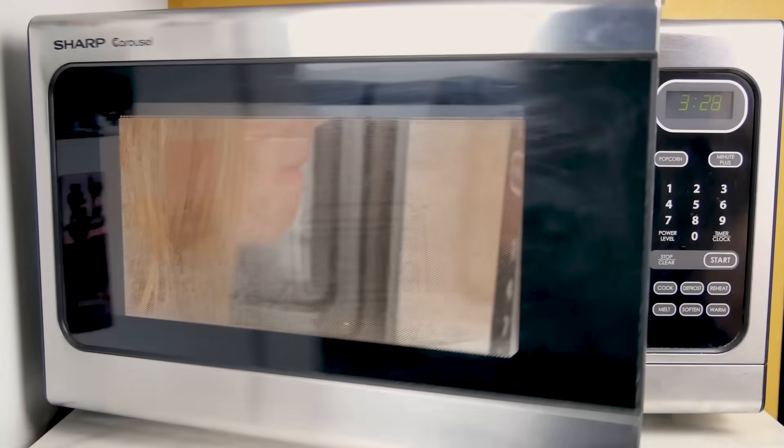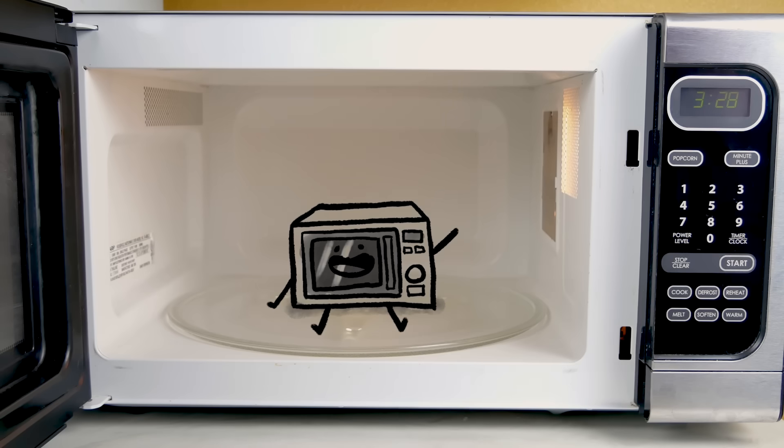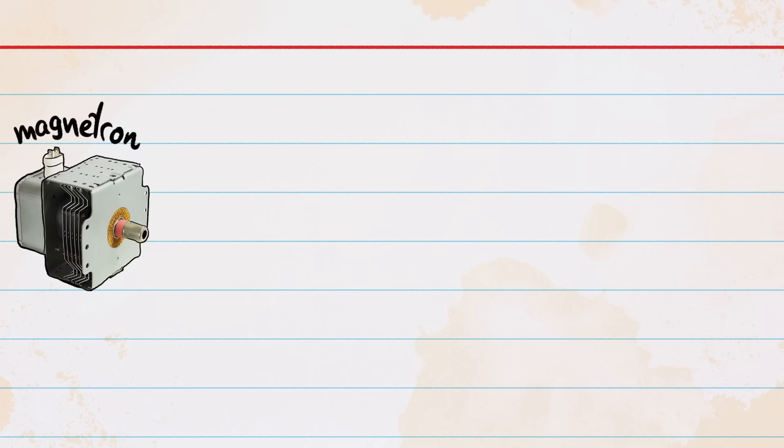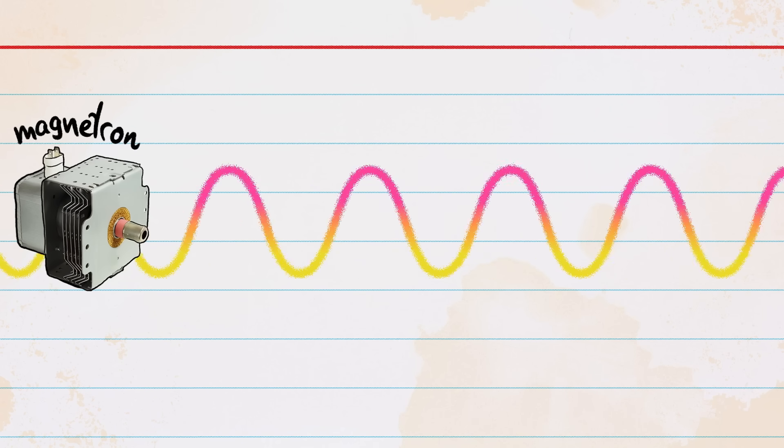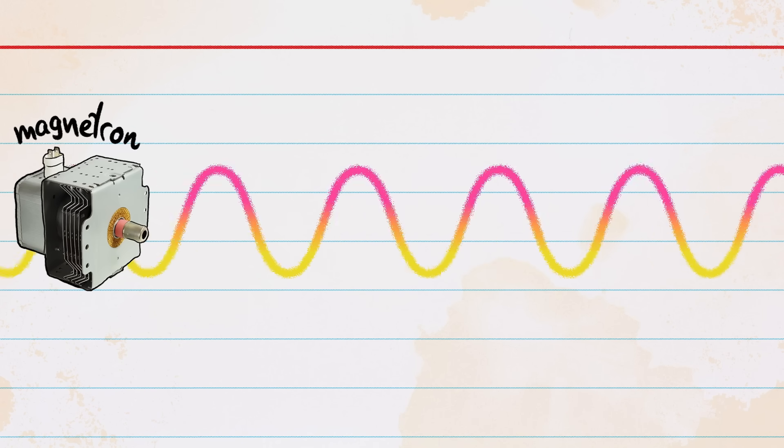First, let's talk about how microwaves actually work, which we have a whole video about. But here's the TLDW version. This thing, a magnetron, sends out relatively low-frequency electromagnetic waves known as, yes, microwaves.